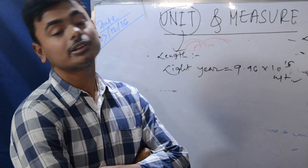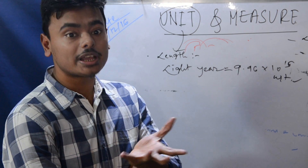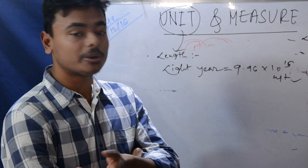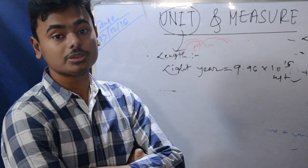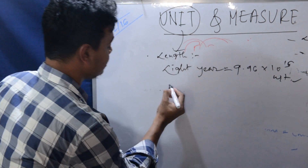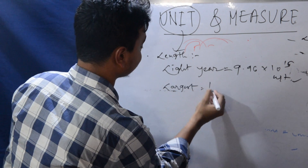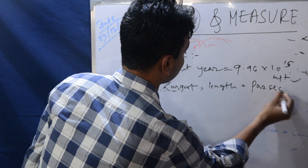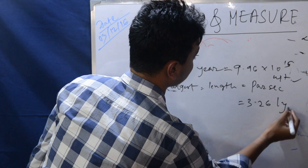Light year is the distance light can cover in one year in vacuum. Vacuum means in vacuum. The next and largest unit of length is parsec, which equals 3.26 light years.